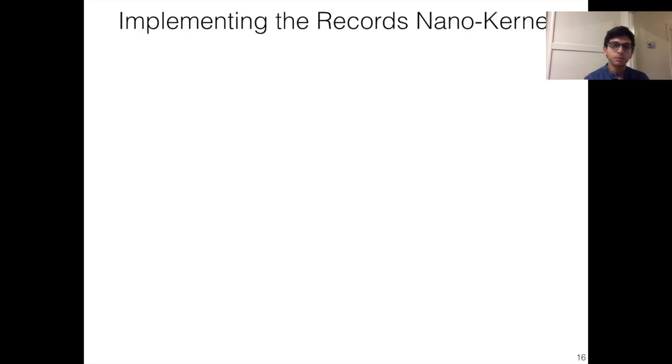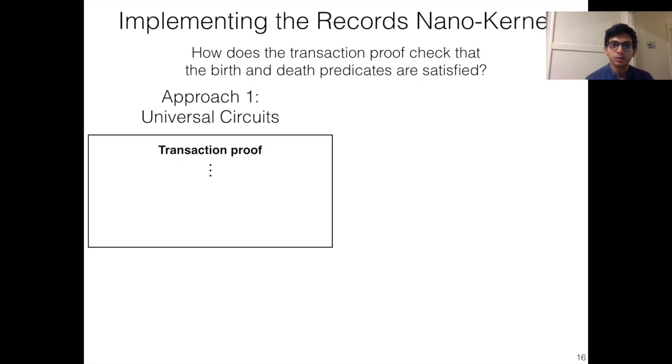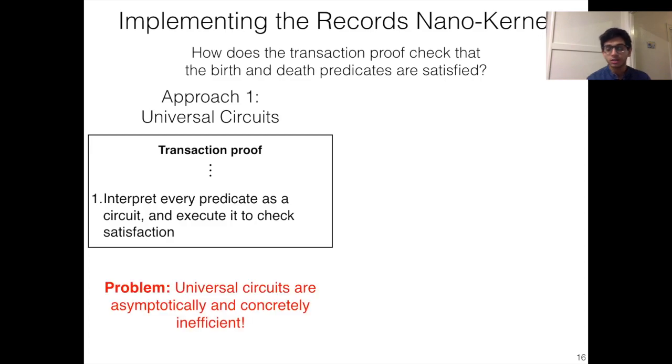So this is great that we have this new theoretical model, but how do we actually implement it? In more detail, how do we enable the transaction proof to check that the birth and death predicates are all satisfied? So there are two approaches to this. The first is a very standard approach, and that is to use universal circuits. So what happens in this approach is that the transaction proof will interpret every predicate as a circuit, and it will execute this circuit and check that it is satisfied. Now, this universal circuit approach in the context of SNARKs has been optimized across a wide range of works. However, despite these optimizations, it's still the case that universal circuits are asymptotically and concretely inefficient. So the performance overhead is roughly 20x.